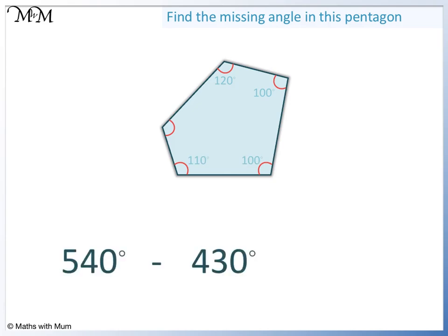540 take away 430 equals 110. So the missing angle is 110 degrees.